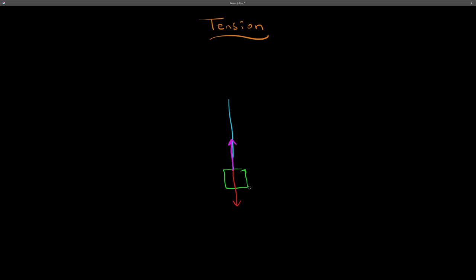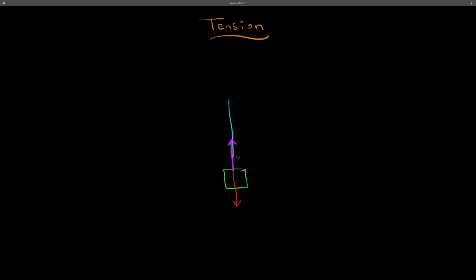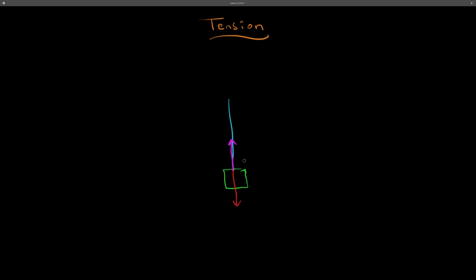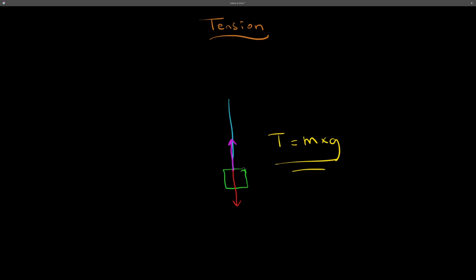If the rope doesn't break and the object is at rest, there are a few important things to know. The force of tension T is equal to the mass times gravity (T = mg). This is important when solving equations. You should also know that tension force is not exactly similar to the normal force — it is a force exerted only using ropes.